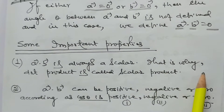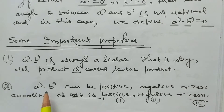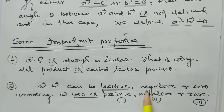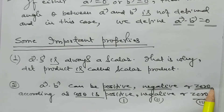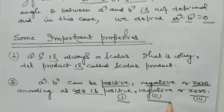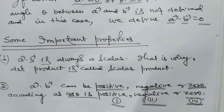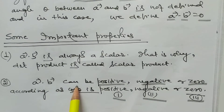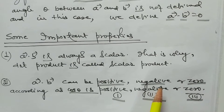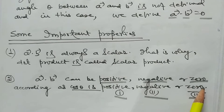Vector A dot vector B can be positive, negative, or zero, according as cos theta is positive, negative, or zero. This is very important. Vector A dot vector B is positive when theta is acute, negative when theta is obtuse, and zero when the angle between vector A and B is 90 degrees.